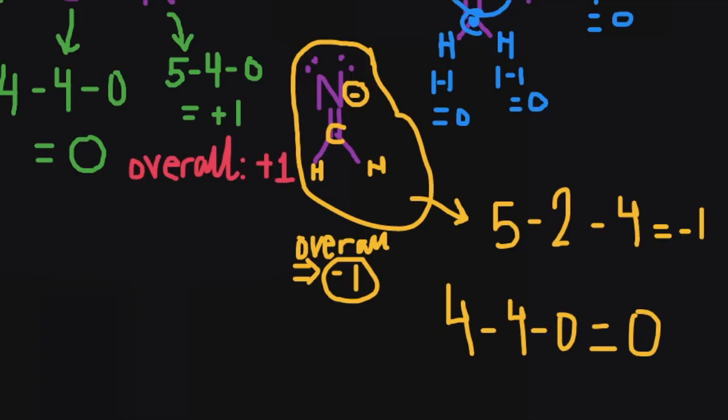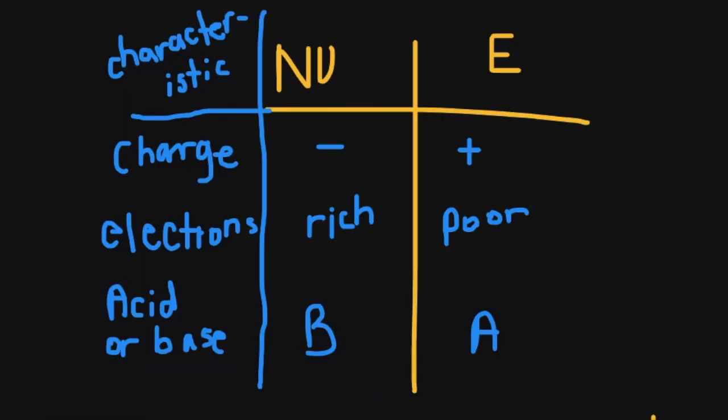Next, let's take a look at nucleophile-electrophile reactions. Before we get into doing the reactions, we need to know what nucleophiles and electrophiles are. There are three main characteristics I use to define these terms. The first one is charge: nucleophiles are usually negatively charged, and electrophiles are usually positively charged. We just talked about formal charge, so now when you see a negative or a positive on a shape, this usually refers to the formal charge of the shape.